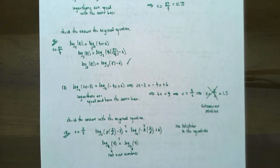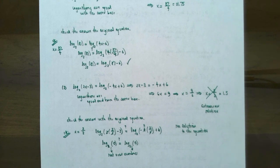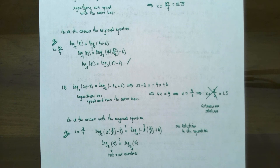That finishes our discussion on logarithmic equations. If you have any questions on the two different types — where a logarithm equals a real number, and where a logarithm equals a logarithm with the same base — please let me know. The important thing is that you check your answers with logarithmic equations. I'll see you at the next video when we solve exponential growth and exponential decay problems using logarithms.